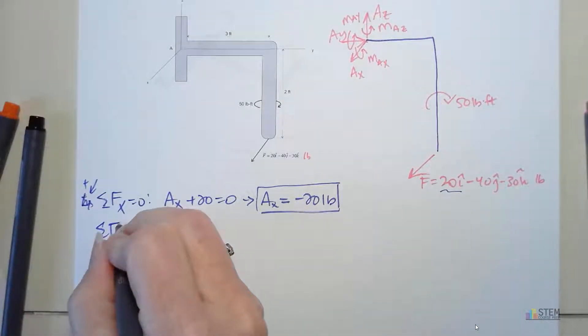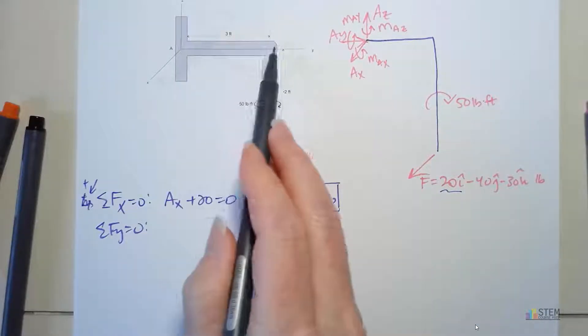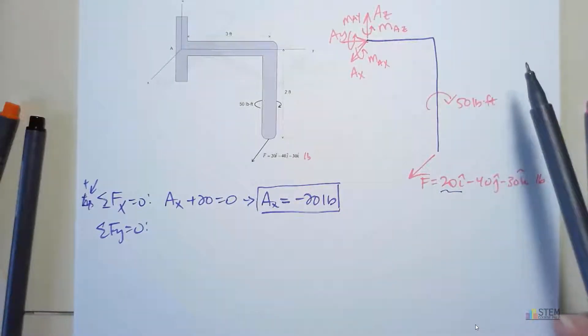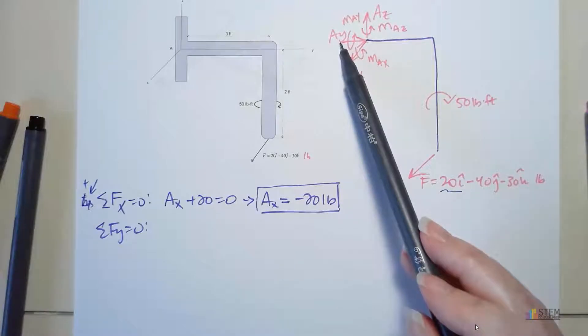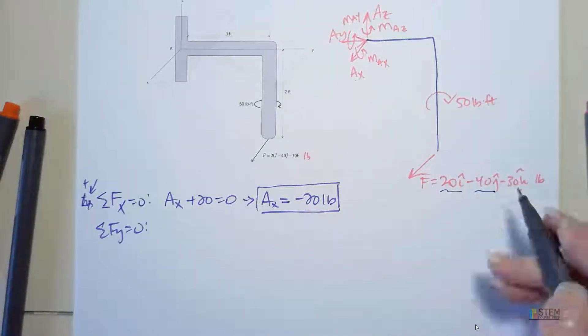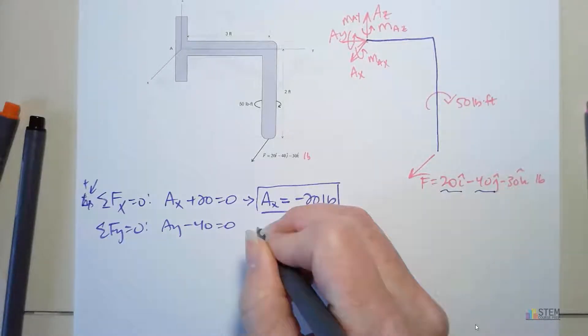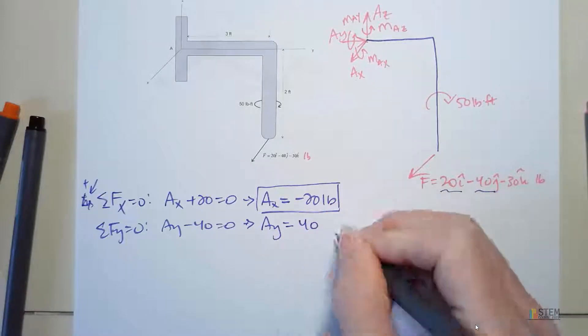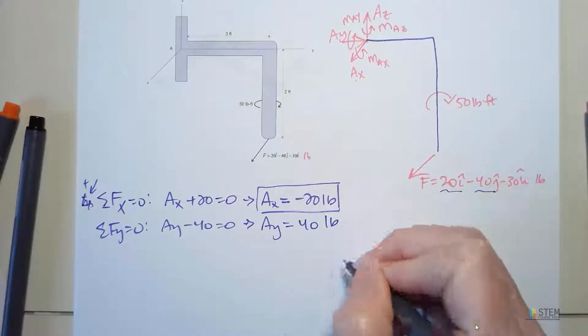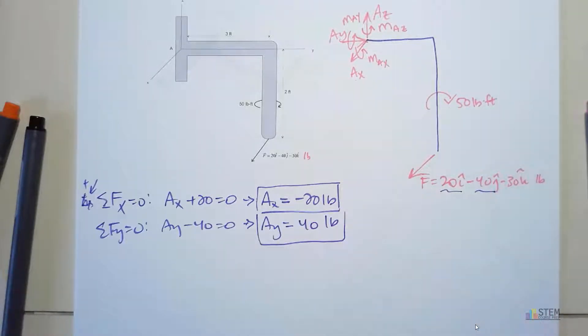Let's go to the Y equation. Now Y is this horizontal line. How many forces do we have in that direction? We've got AY, and then, of course, down here we've got negative 40. So we're going to have AY minus 40 equals zero. Fortunately, we can solve for AY. That gives us 40. So we've got 40 pounds. Box that one up.